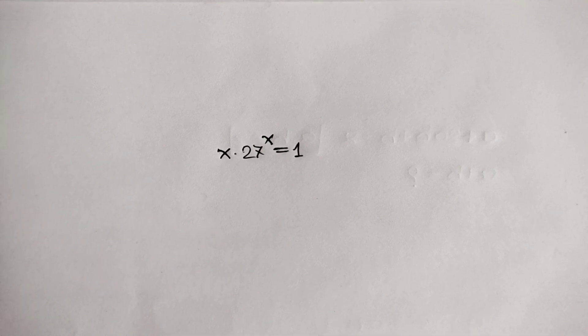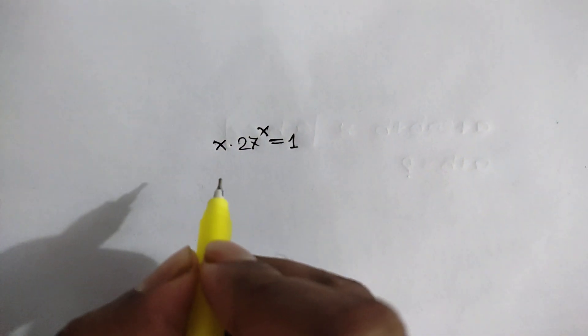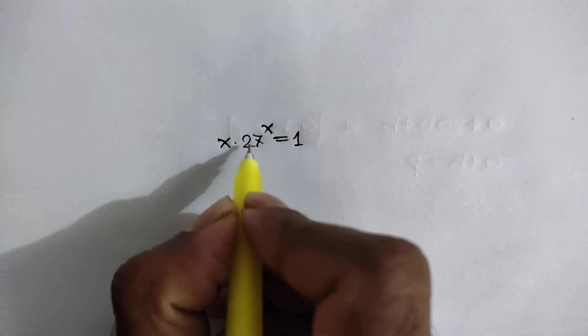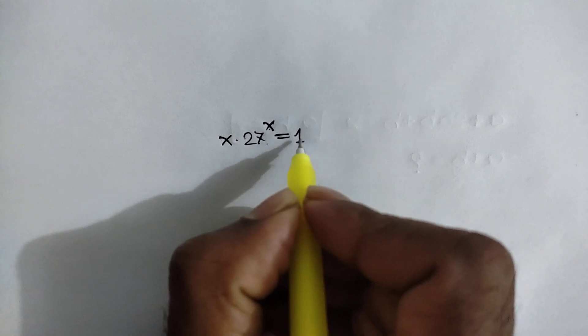Hi everyone, in this video I am going to show how to find the value of x when x times 27 to the power x is equal to 1.